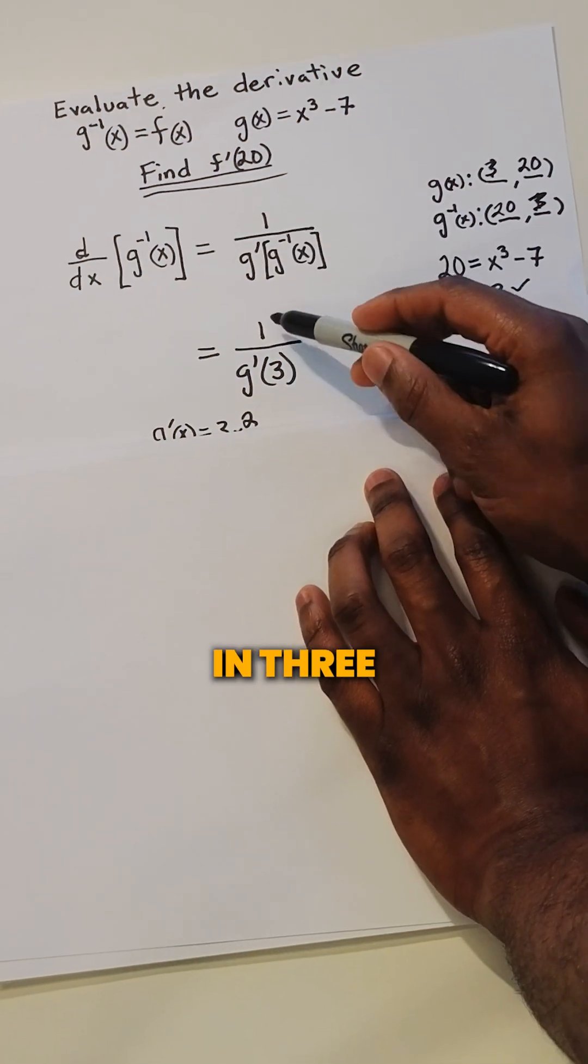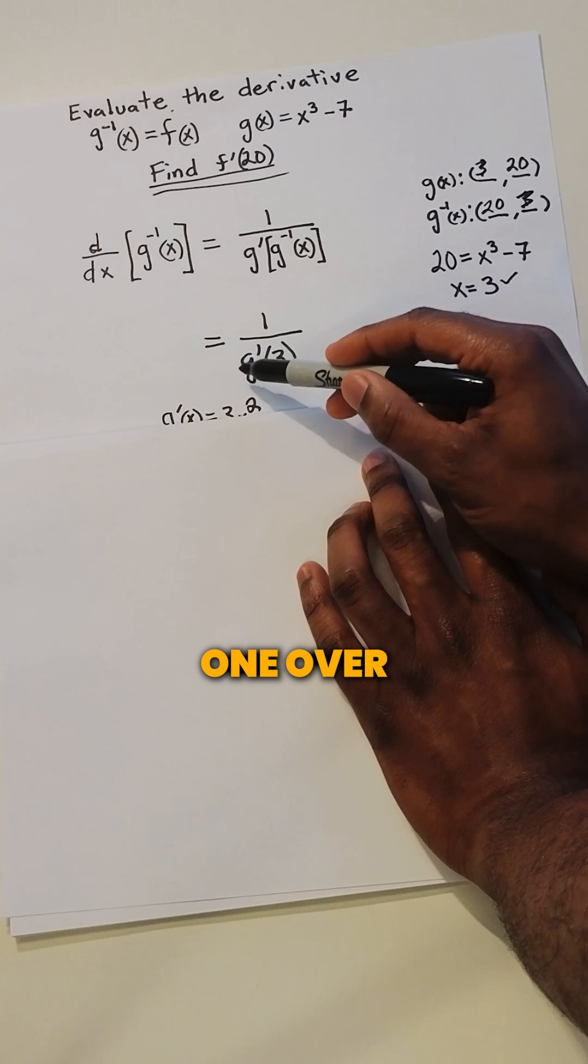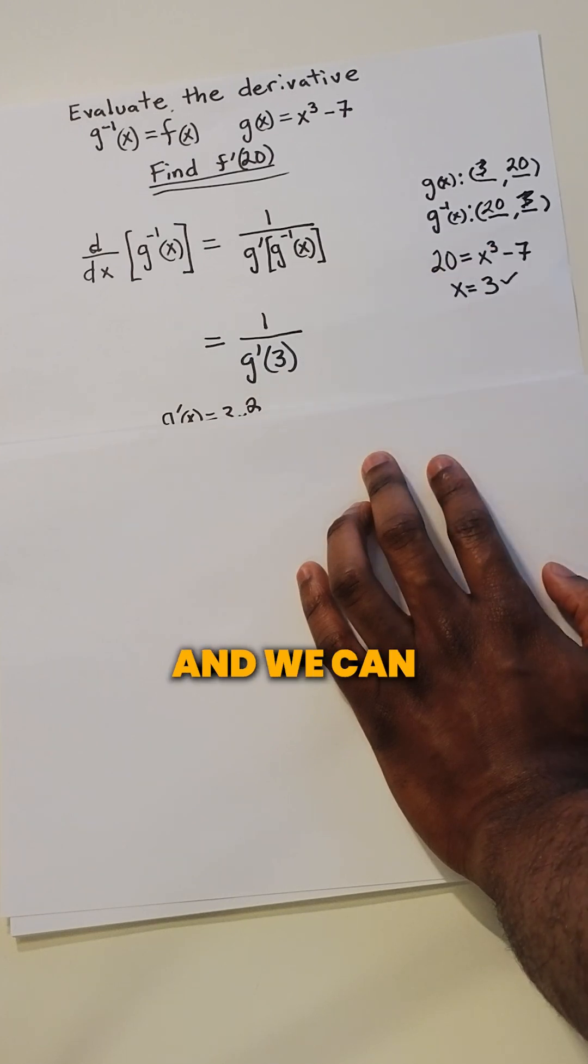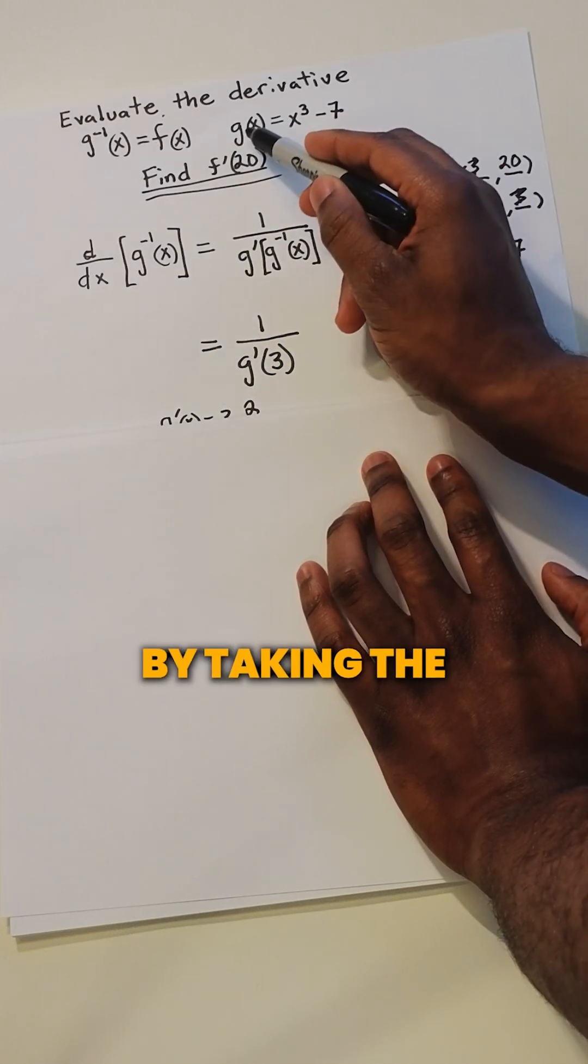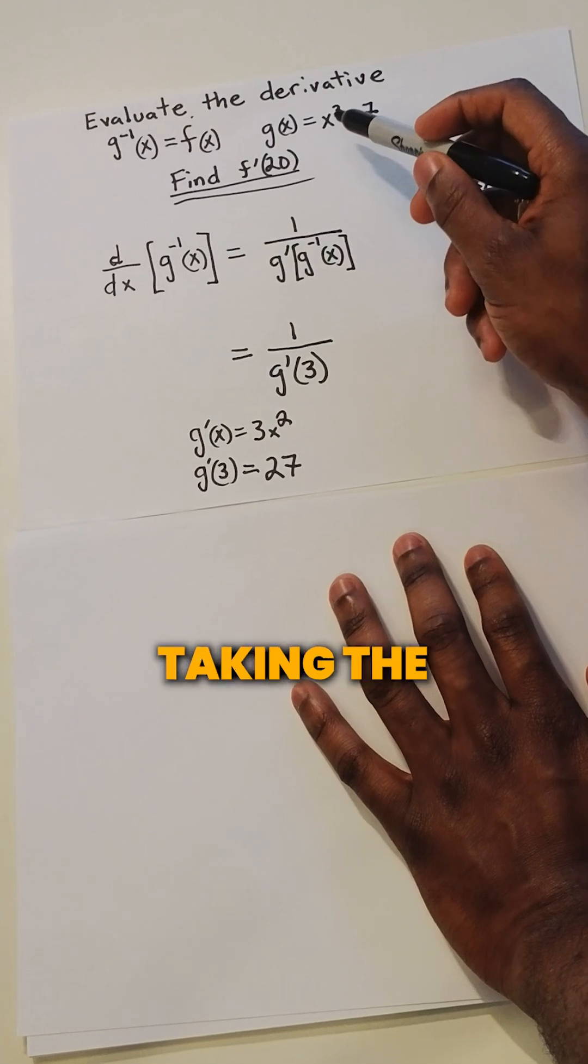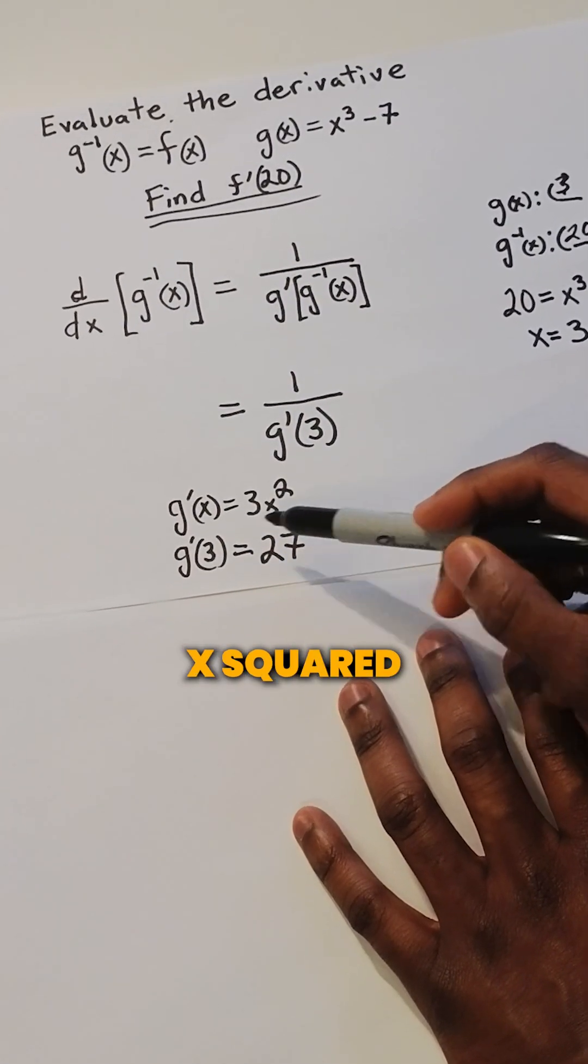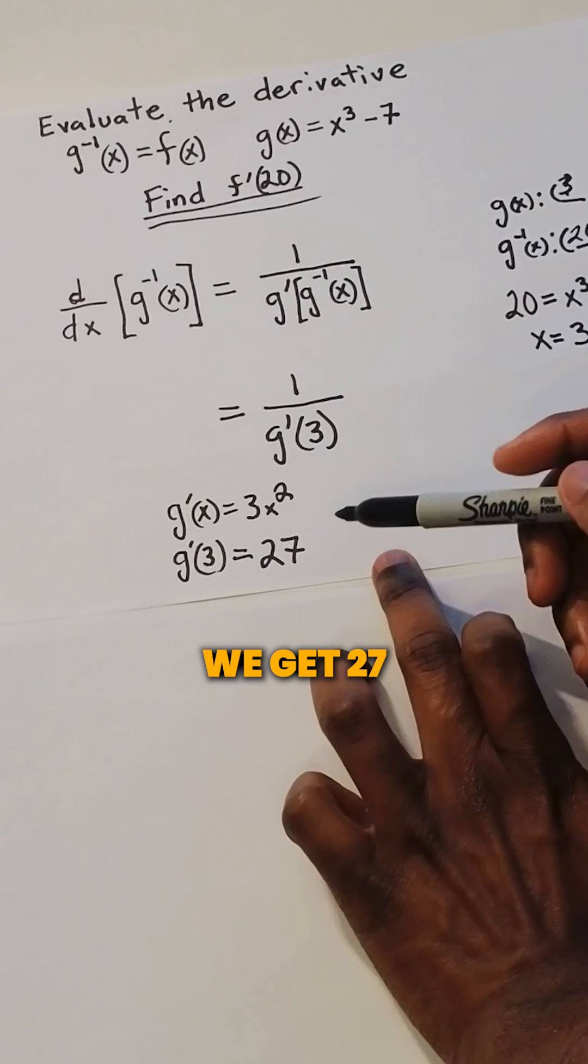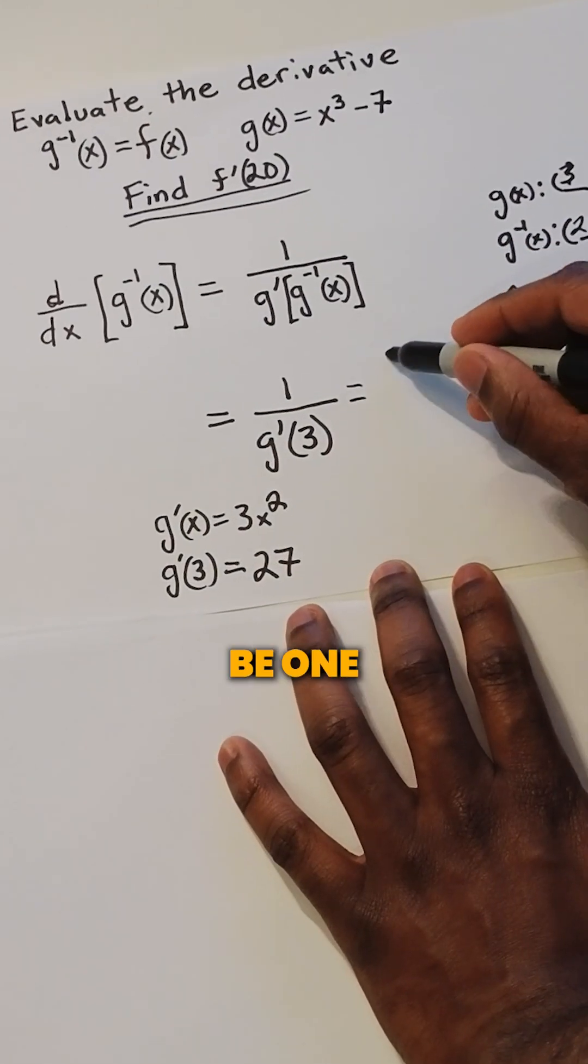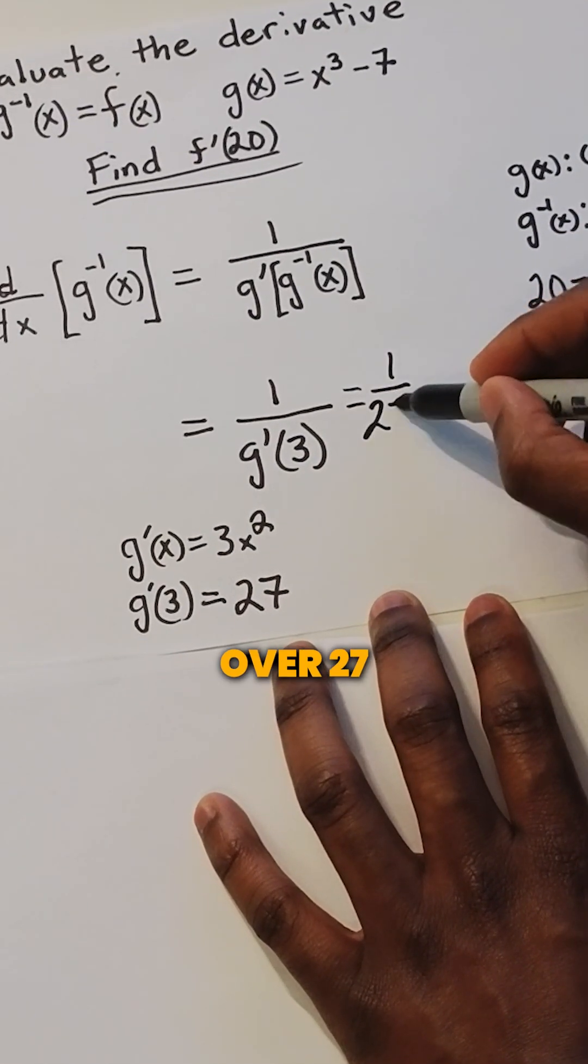Our final step now is to plug in 3 into our derivative, 1 over g prime of 3. We can find the derivative of g just by taking the derivative here. So we end up getting g prime equals 3x squared. We plug in 3, we get 27. So our final answer is simply 1 over 27.